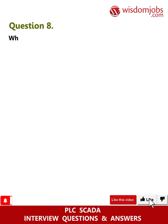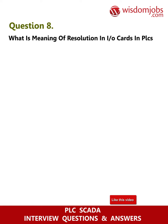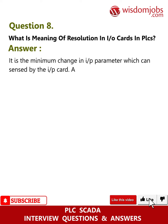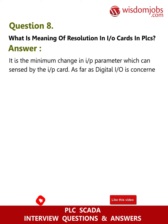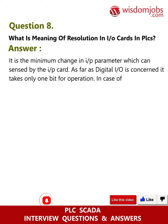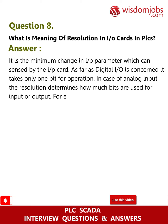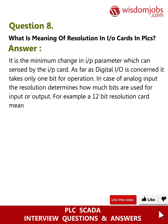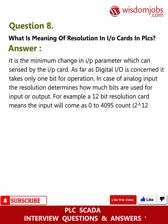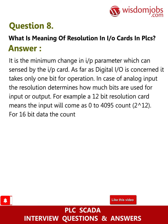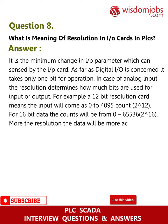Question 8: What is the meaning of resolution in IO cards in PLCs? Answer: It is the minimum change in an input parameter which can be sensed by the input card. For digital I/O, it takes only one bit for operation. For analog input, the resolution determines how many bits are used — for example, a 12-bit resolution card means the input will range from 0 to 4095 counts, while 16-bit data gives counts from 0 to 65536. More resolution means the data will be more accurate.